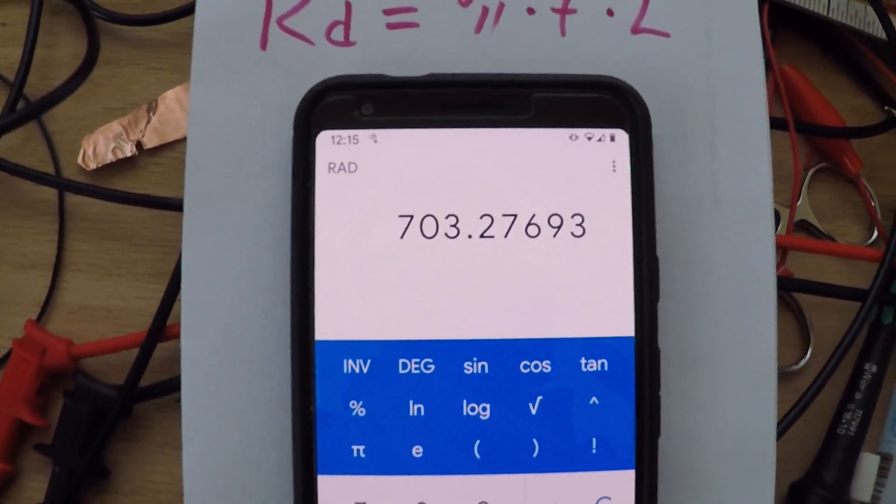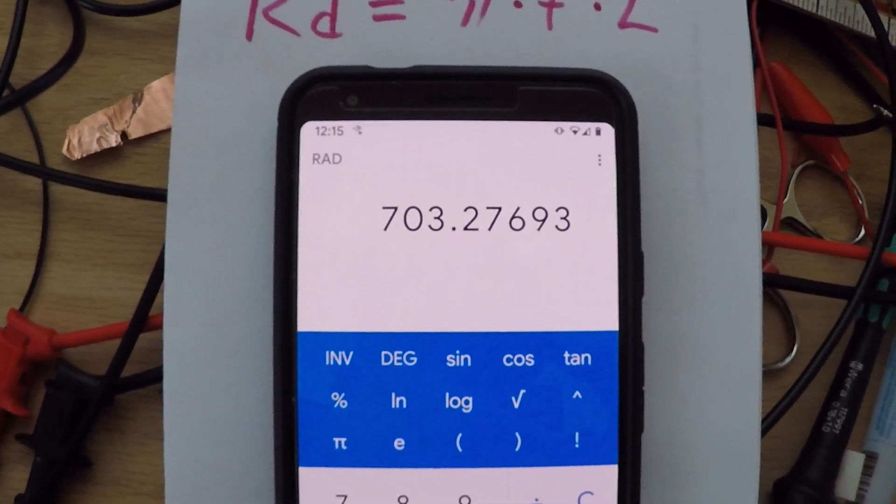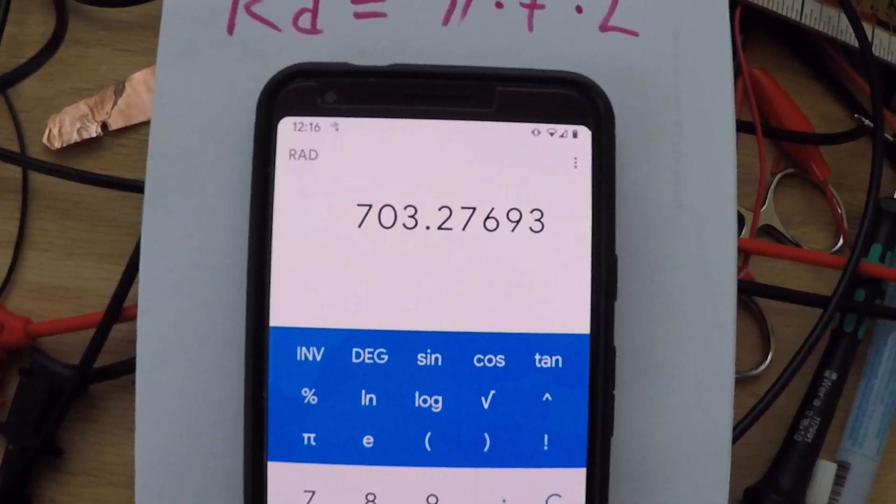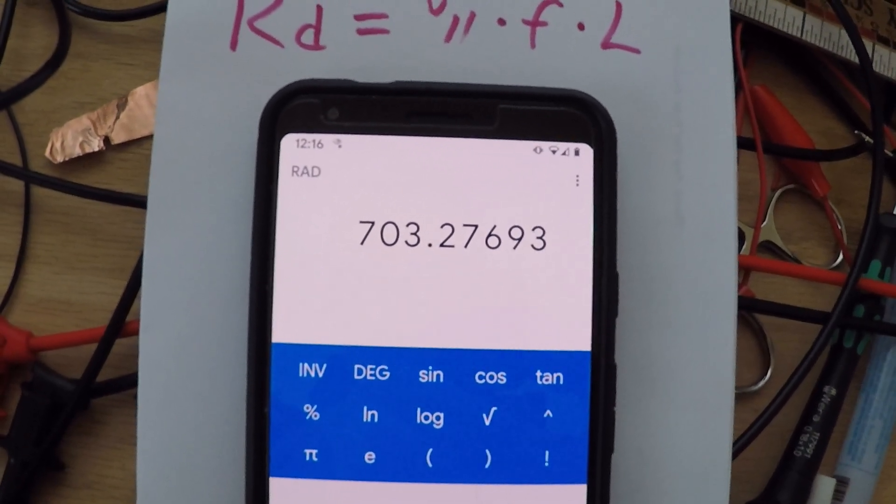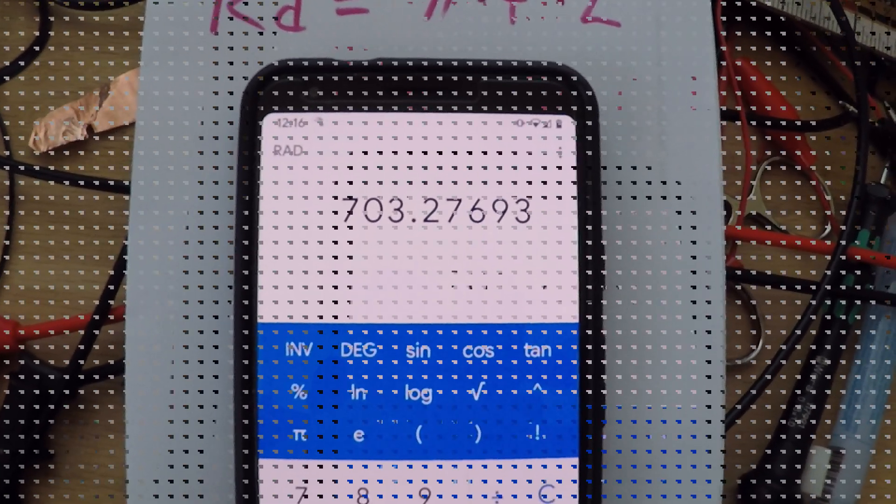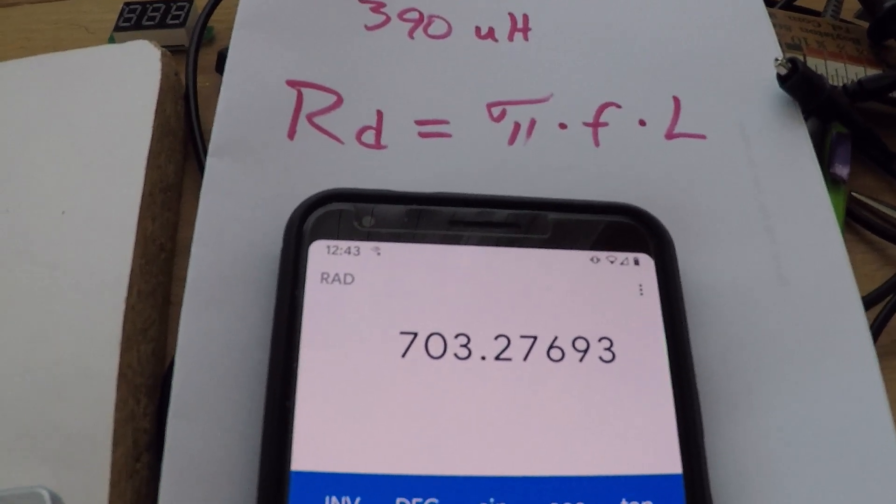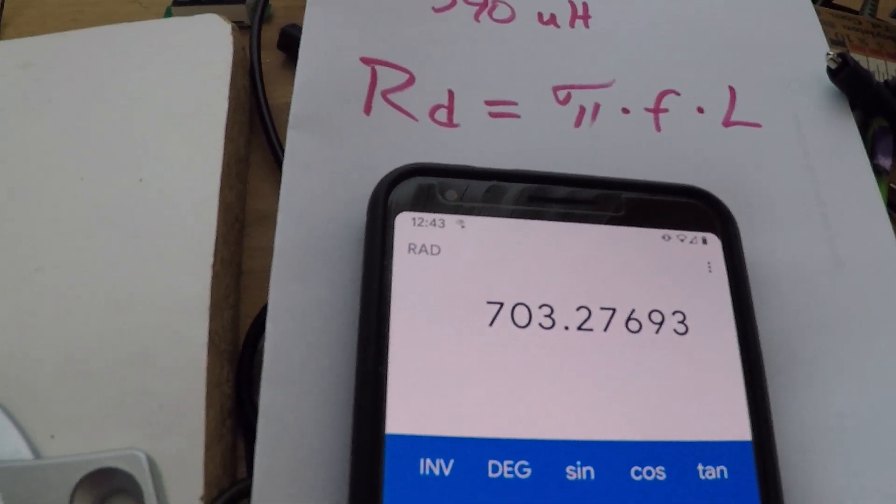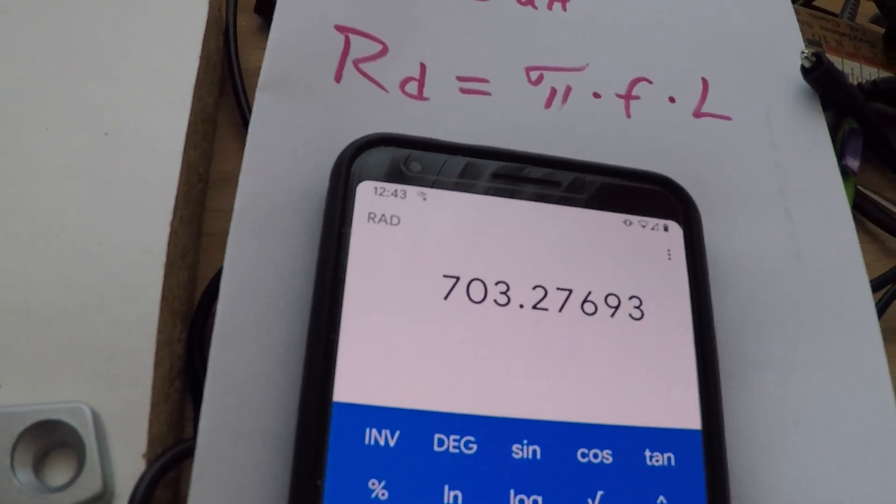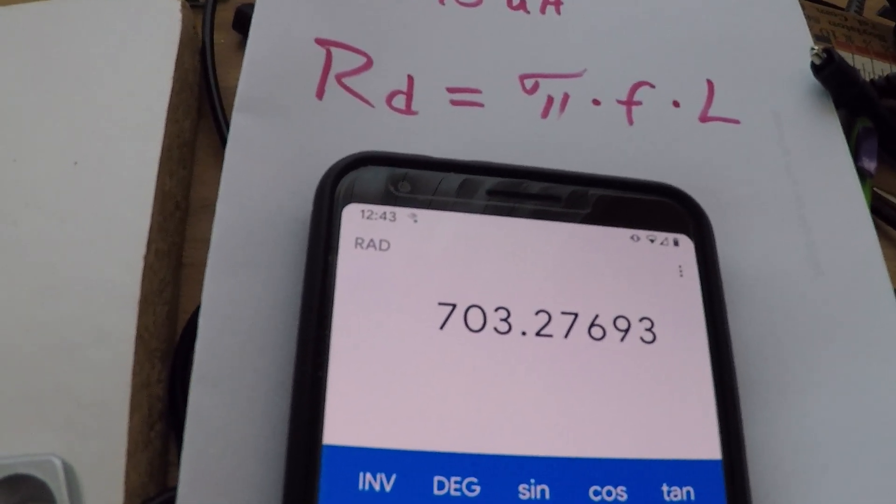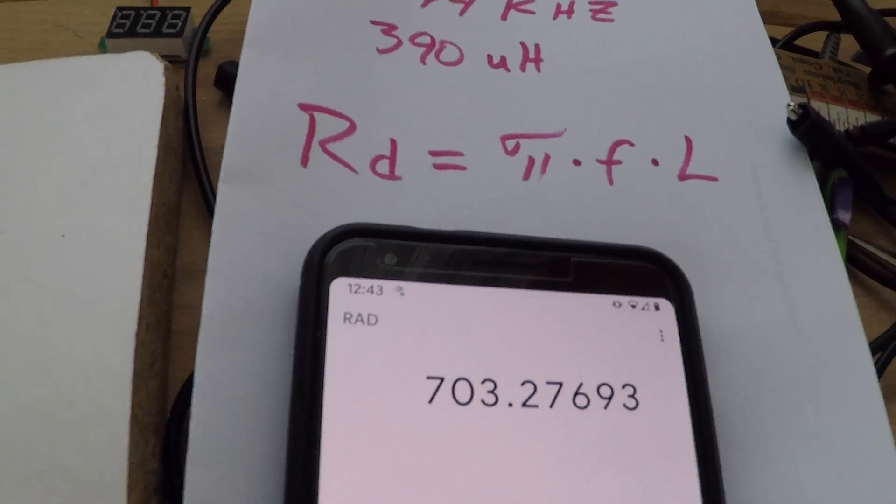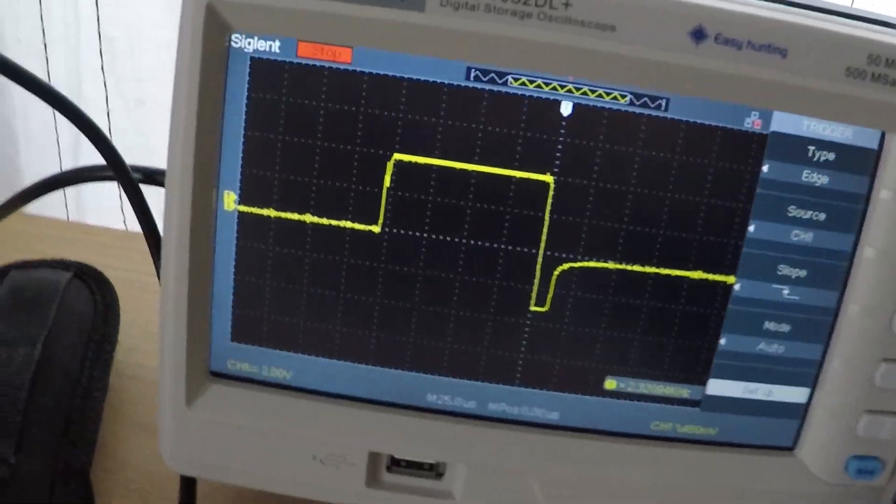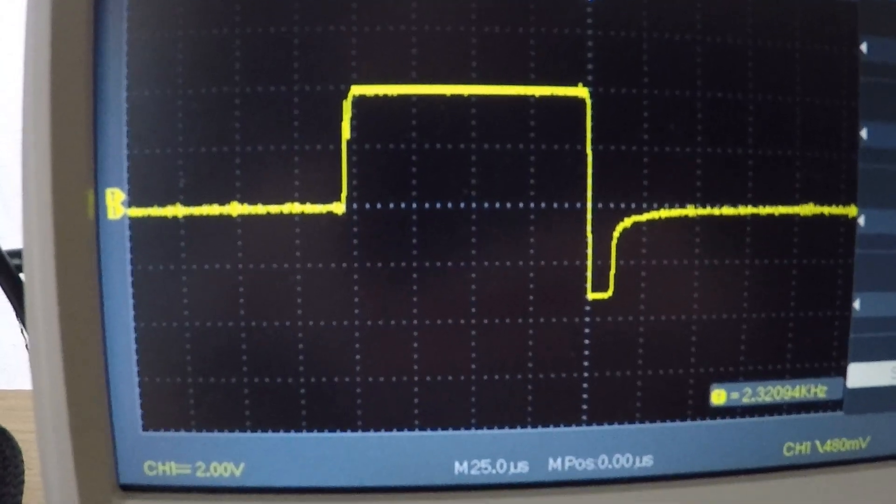So let's see what I can put together and I'll show you what it looks like on the scope. Alright guys, so approximately 700 ohms. I think I've got something close to 680 and this is what the scope looks like.